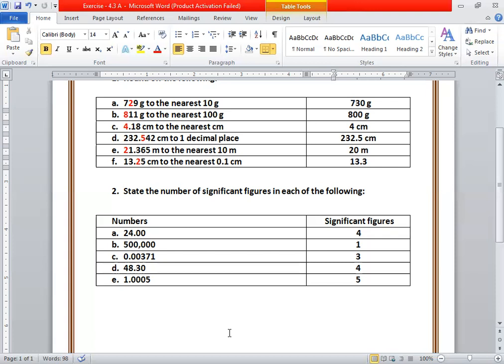Then 48.30. This zero is countable because after the decimal point, all zeros are countable, so there are 4 significant figures. Then we have 1.0005. In between non-zero digits, all zeros are countable, so there are 5 significant figures.